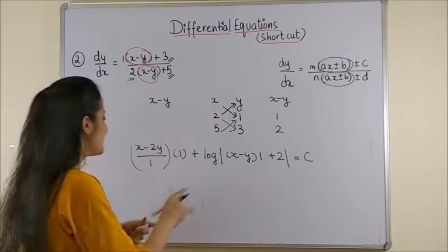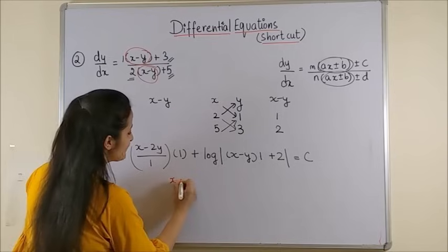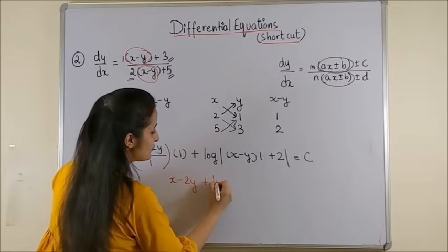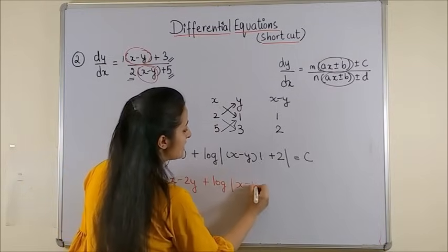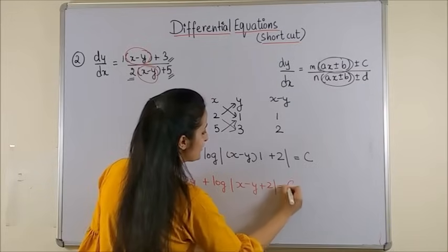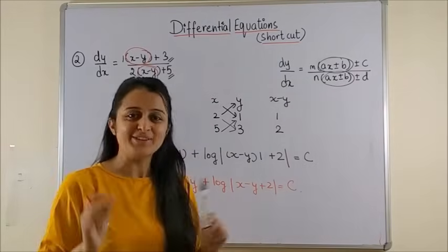Wasn't that quick? So, on simplifying, you get x minus 2y plus log mod x minus y plus 2 is equal to c. Please have a look.